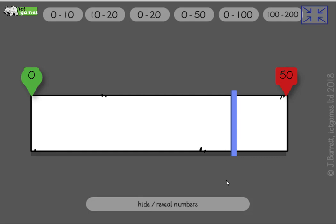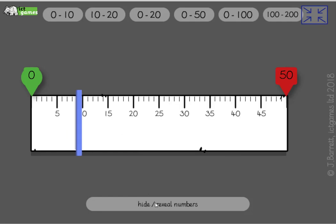Where would 10 be? Point to the screen. Yeah, I'm guessing about there. Not too bad. Let's make it a bit harder now. Let's take it to the next level. This is 0, this is 100.